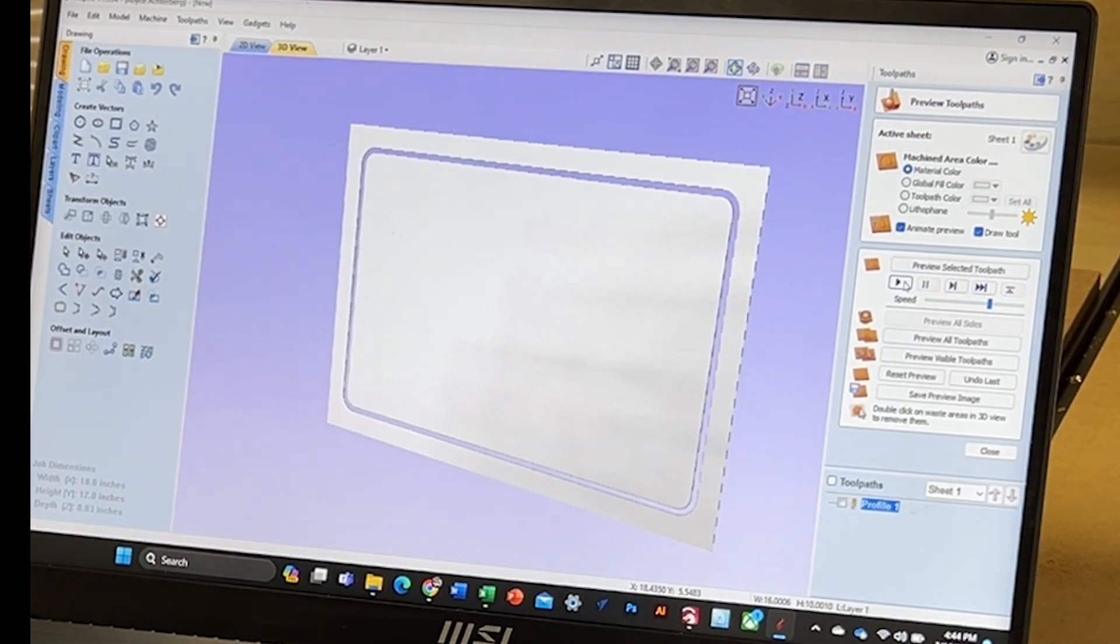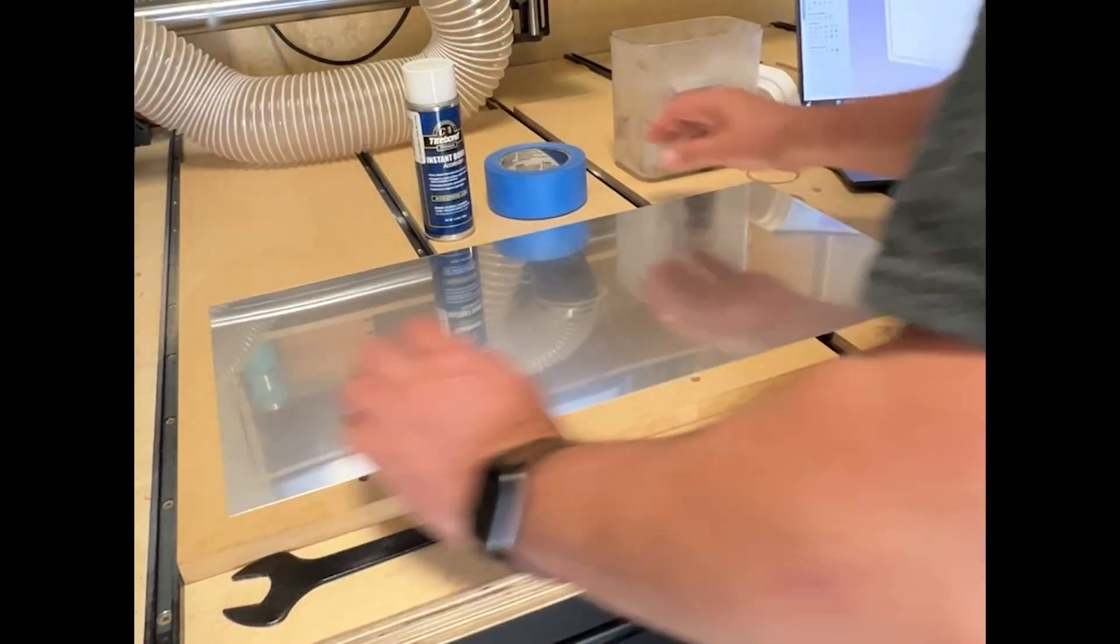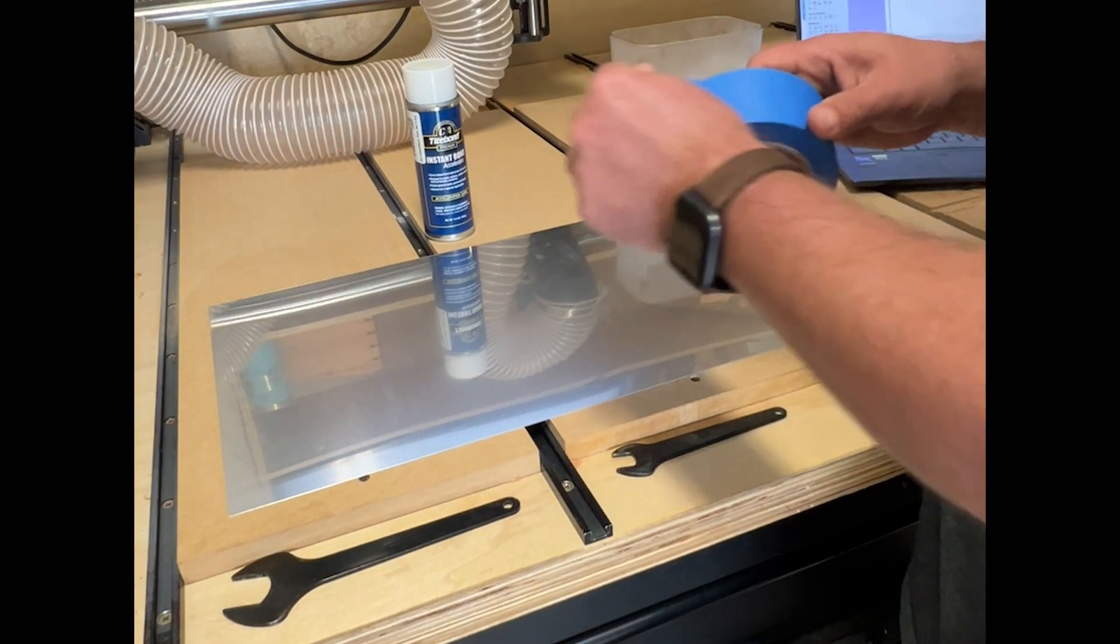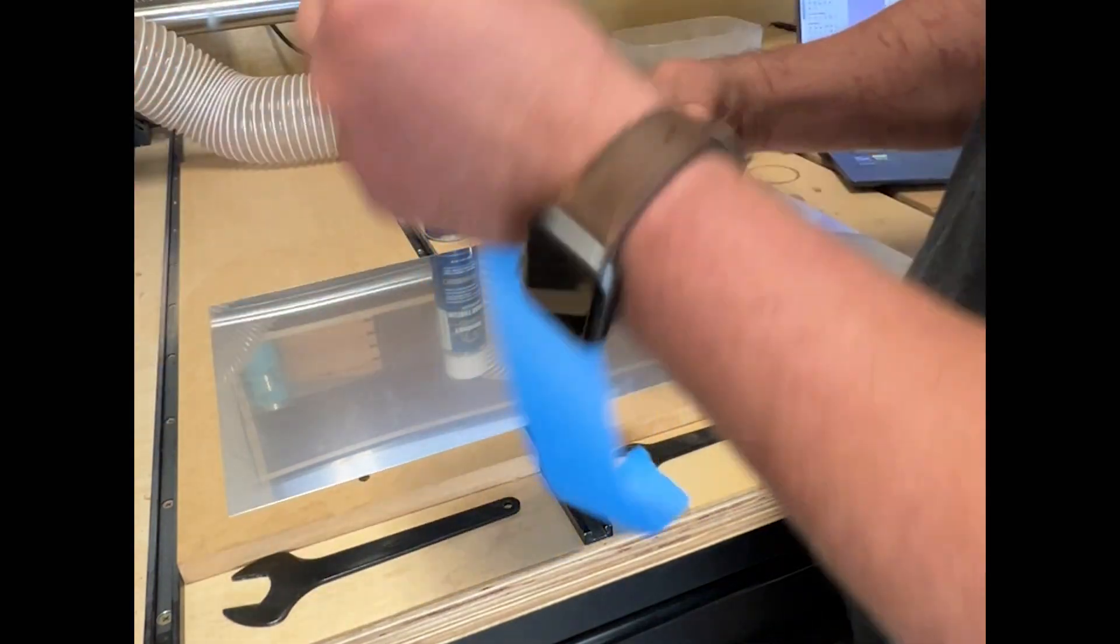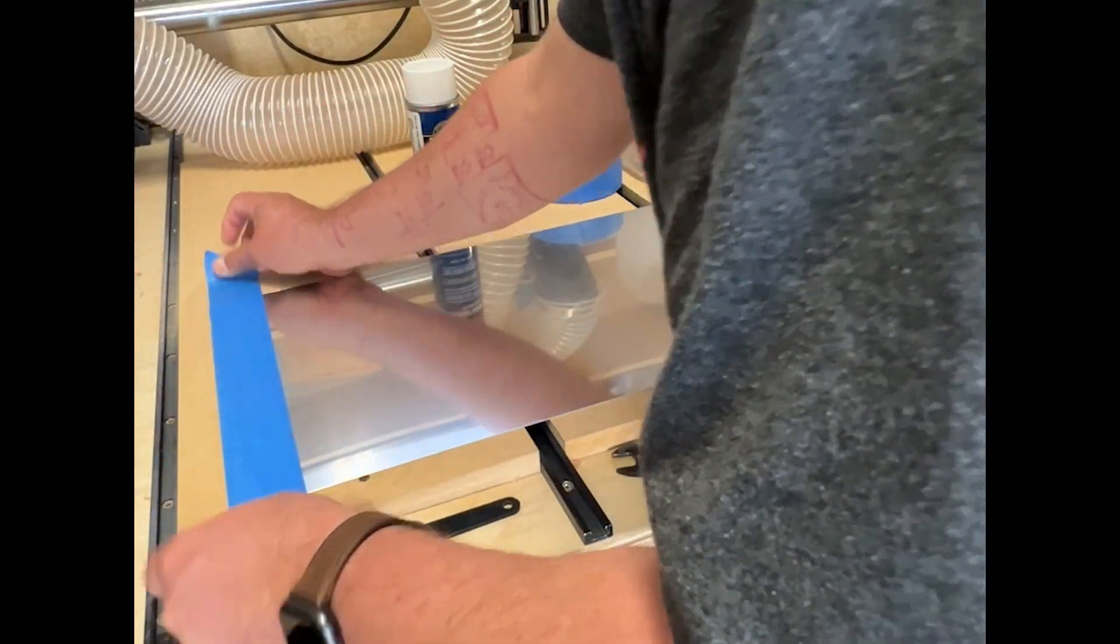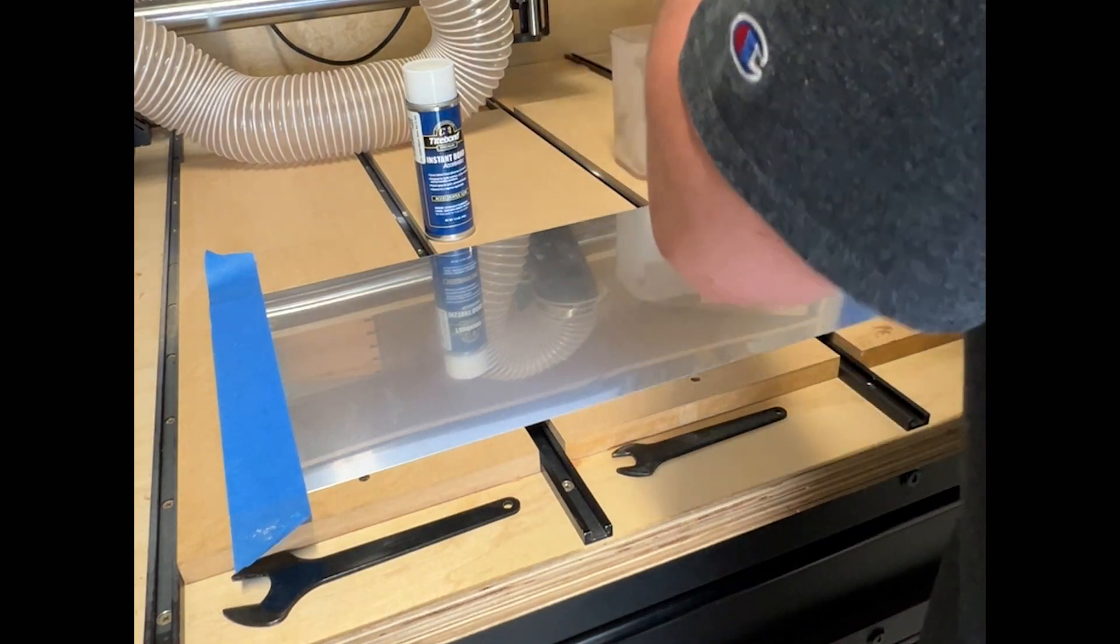Tons of ways to hold things down with the CNC but I really thought about this one and I was like man, this is the easy button - let's just go ahead and use some CA glue and some accelerator and it'll not move, and it didn't.